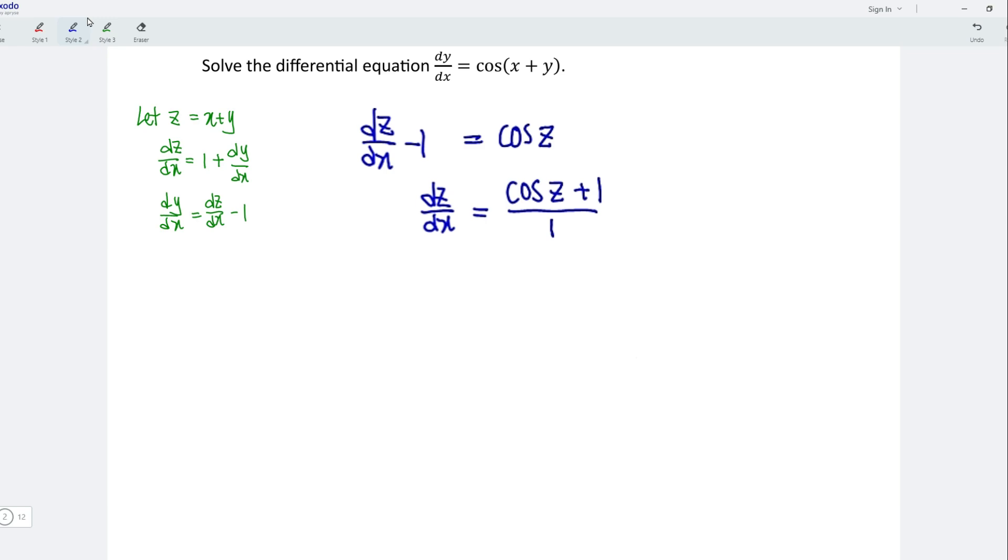From here, we should see that I should group this as a single term. And now let's split the variables with z on one side and x on the other side. So we should have 1 over cos z plus 1 dz equals 1 over 1, or simply 1 dx.